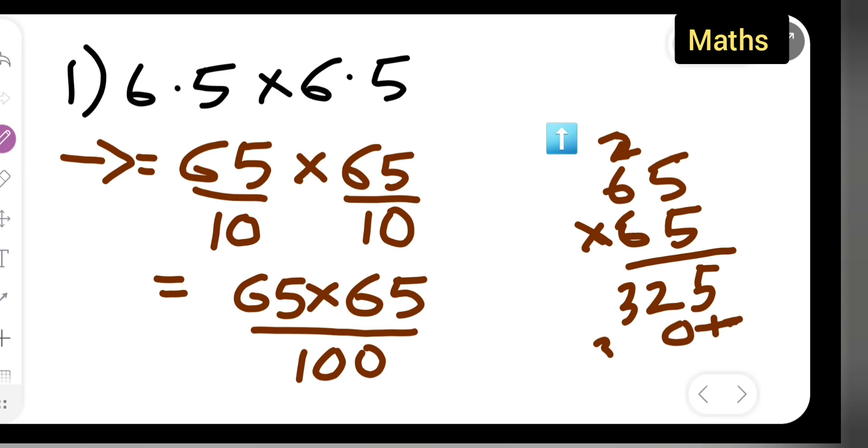Then 6 sixes are 36, three, eight, nine. So you're going to get 5, then 2 plus 0 is 2, nine, ten, eleven, twelve, and then 4225. Are you all getting 4225? Yes, right.